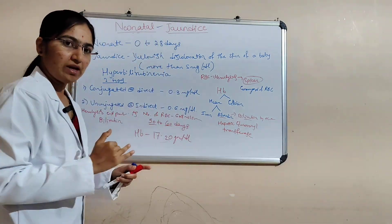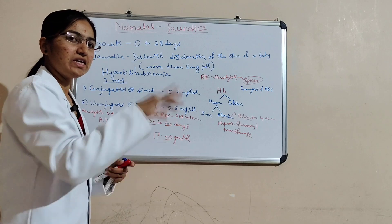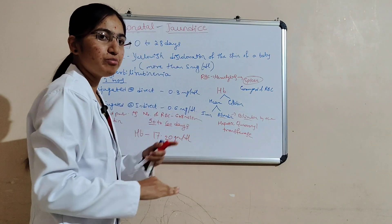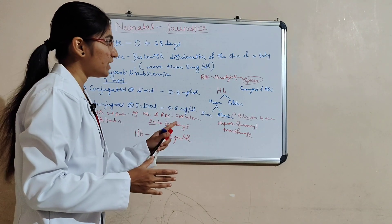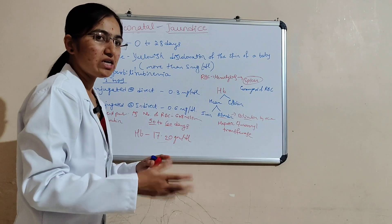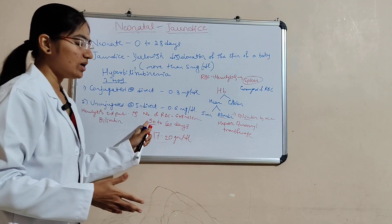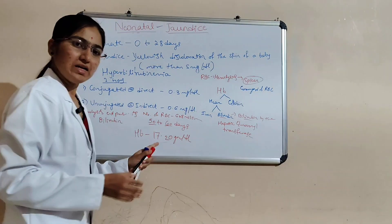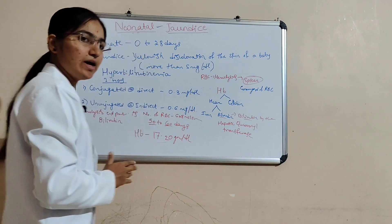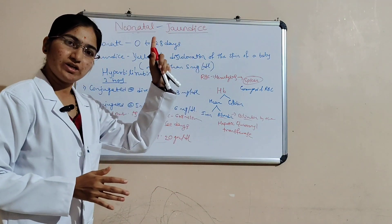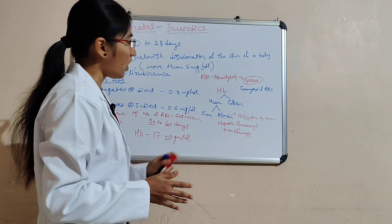There is an increased level of bilirubin in the blood because RBCs break down via hemolysis. Due to the number of RBCs and the short lifespan of RBCs in the neonate — because the number of RBCs is more and the lifespan is less — that is the cause.